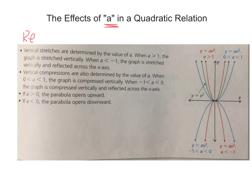If you recall from chapter 3, vertical stretches are determined by the value of A. When A is greater than 1, the graph is stretched vertically. When A is less than 1, the graph is stretched vertically and reflected across the x-axis. The graph is described as opening up or opening down when A is positive or negative.